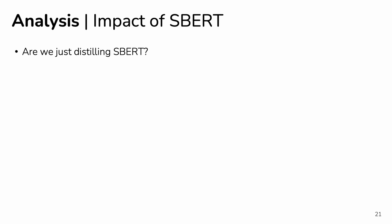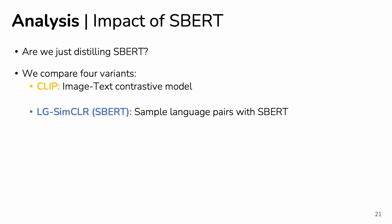One thing we wanted to understand was how much does SBERT impact our performance. While CLIP only learns from images and captions, we use a model trained on a separate large text corpus to sample our pairs. We wondered if we were just distilling SBERT. To answer this, we compared four models: CLIP and our approach SimCLR trained with SBERT-sampled pairs. To evaluate SBERT's impact on CLIP, we considered a CLIP and SBERT hybrid model — rather than train CLIP's text encoder from scratch, we used a frozen SBERT model as the text encoder and learned a projection layer on top of it. If SBERT features are particularly useful for visual representation learning, this should improve CLIP's performance.